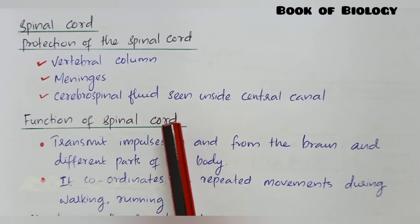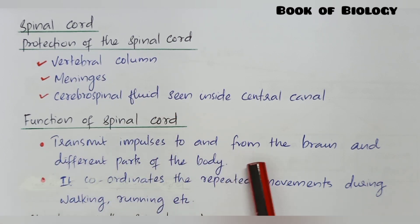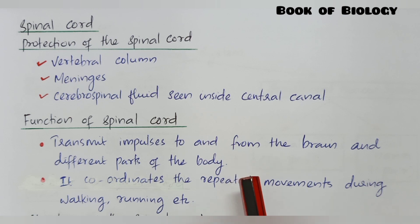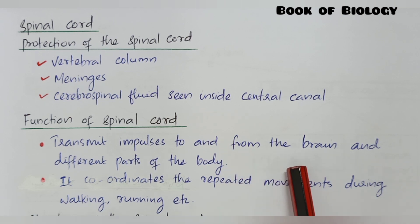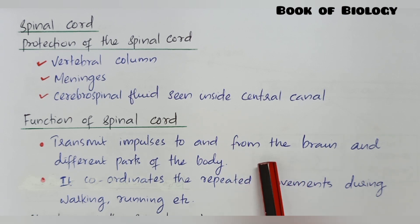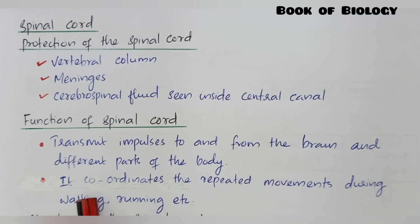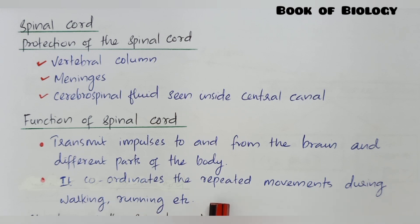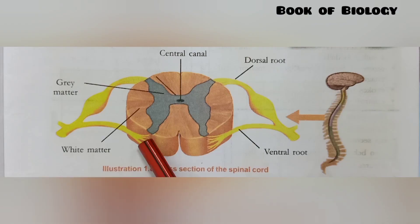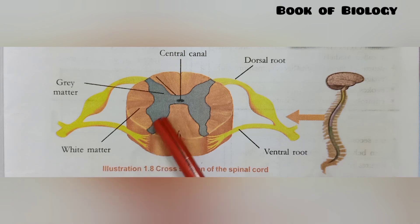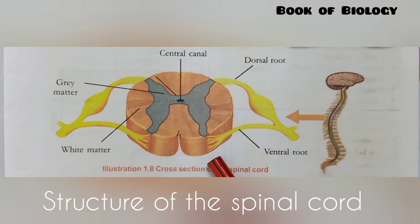The functions of the spinal cord include: transmitting impulses to and from the brain and different parts of the body, and coordinating the repeated movements during walking and running. This cross-section of the spinal cord shows how impulses travel through it.